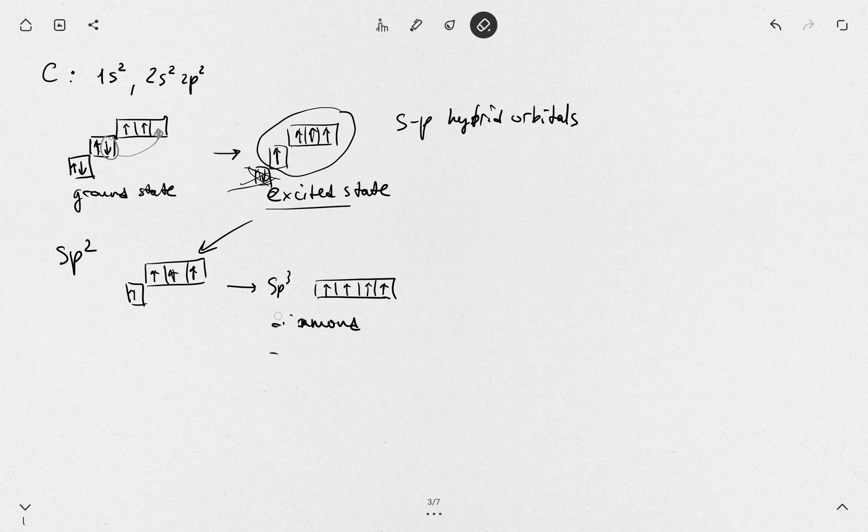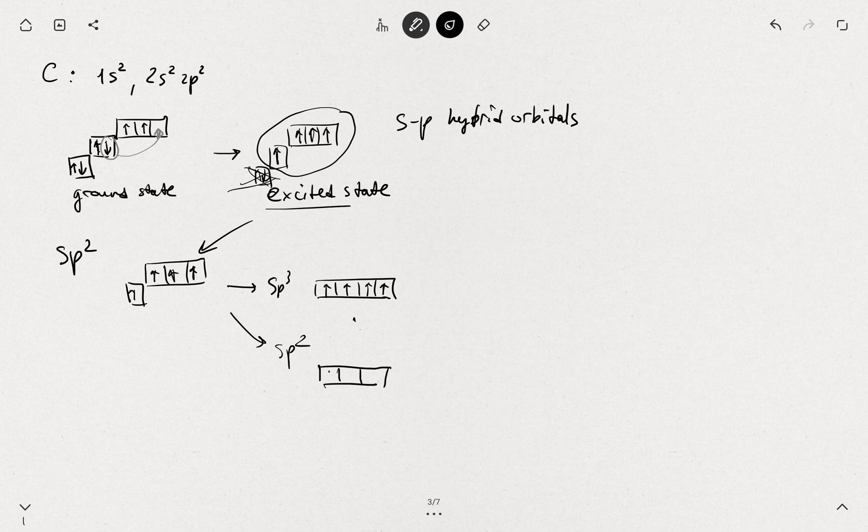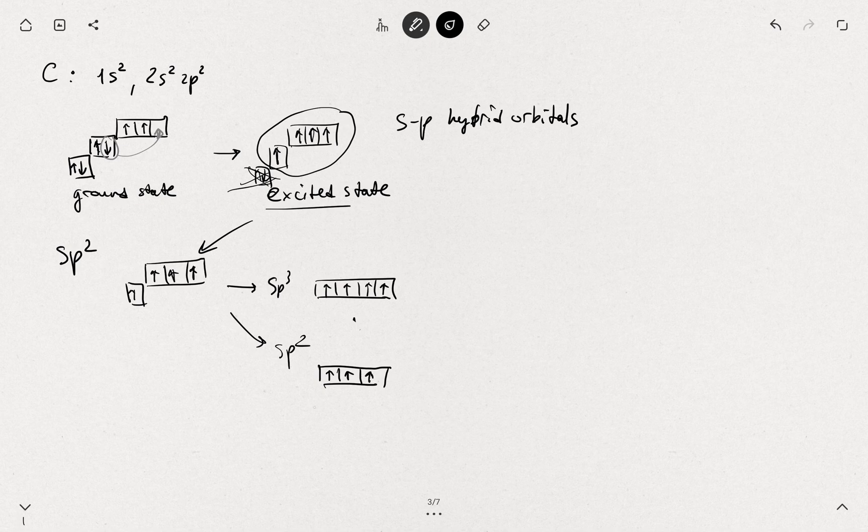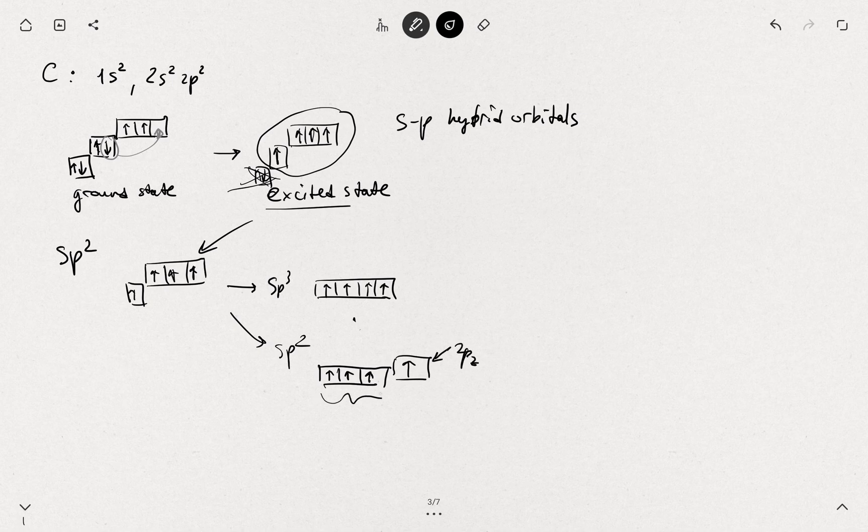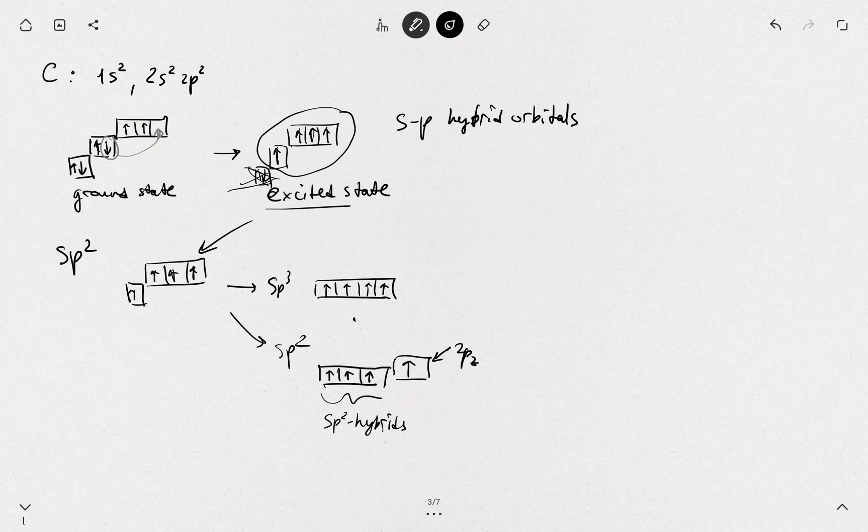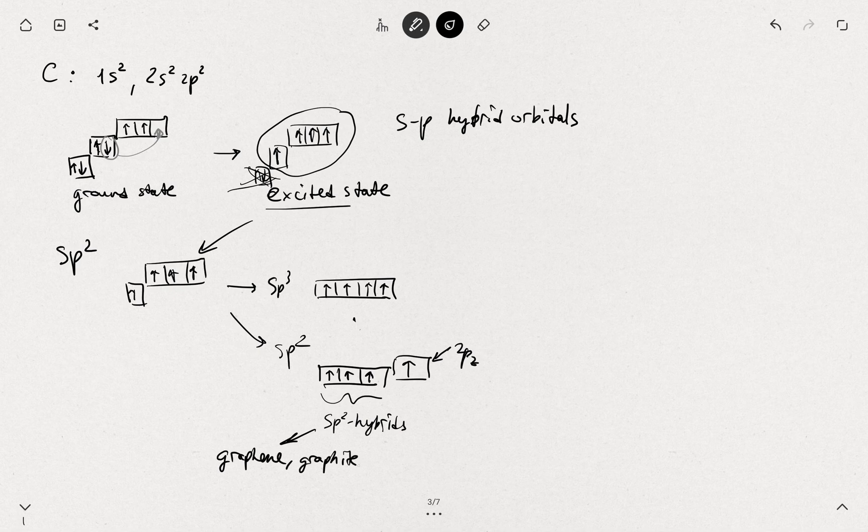In the sp2 hybridization you will have 3 sp2 hybrid orbitals. And then you have a slightly higher energy 2pz orbital. You have 3 sp2 hybrids. And this is basically what forms the chemical structure, the bonds in graphene, graphite or in a benzene molecule.